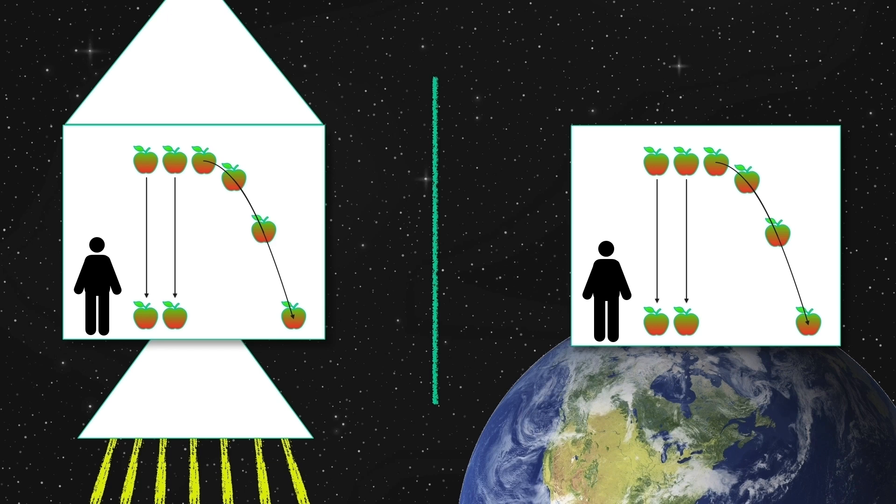On the left side, it's a rocket accelerated frame. And on the right side, it's a gravitational field. And there's no way to tell the difference. And this is the weak equivalence principle in action. There's no difference at all between inertial mass and gravitational mass.